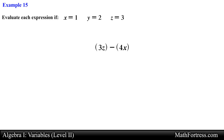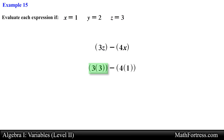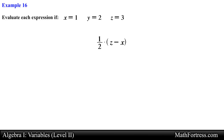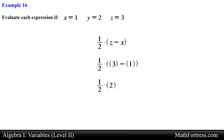Let's try the next expression: the quantity (3 times z) minus the quantity (4 times x). We have two parentheses, so we work on each before subtracting. Substituting z with 3 and x with 1, the left-hand side simplifies to 9 and the right-hand side simplifies to 4, giving a final answer of 5. Next, one-half times the quantity (z minus x): substituting gives 3 minus 1, which equals 2, and 2 times one-half equals 2/2, which reduces to 1.